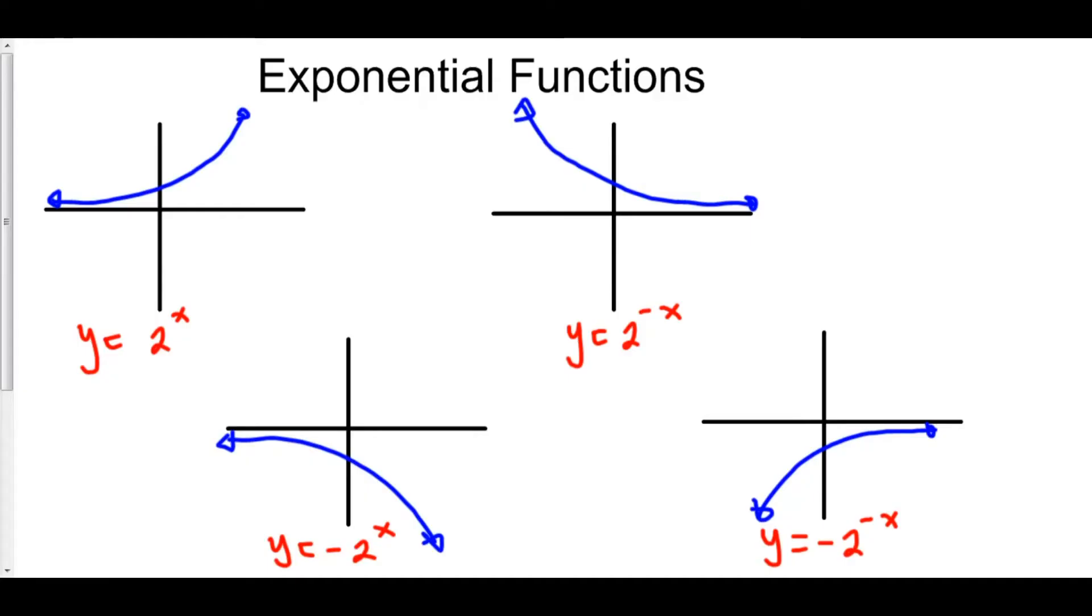There are really only four ways that an exponential function can be oriented. Imagine the graph y equals 2 to the x.